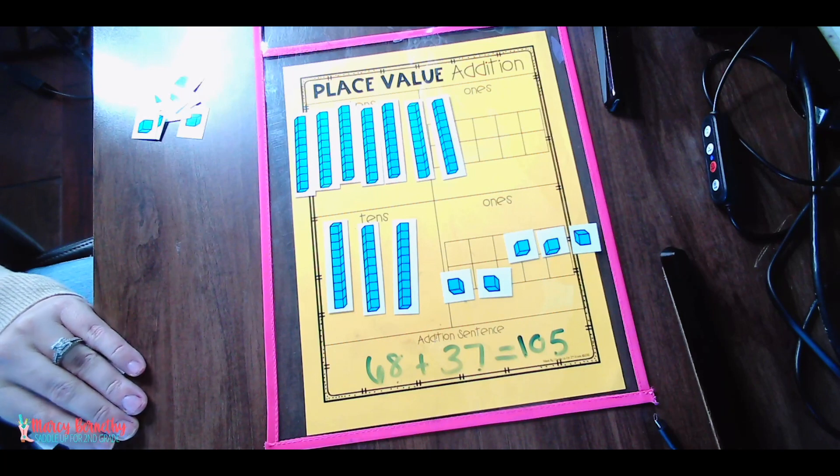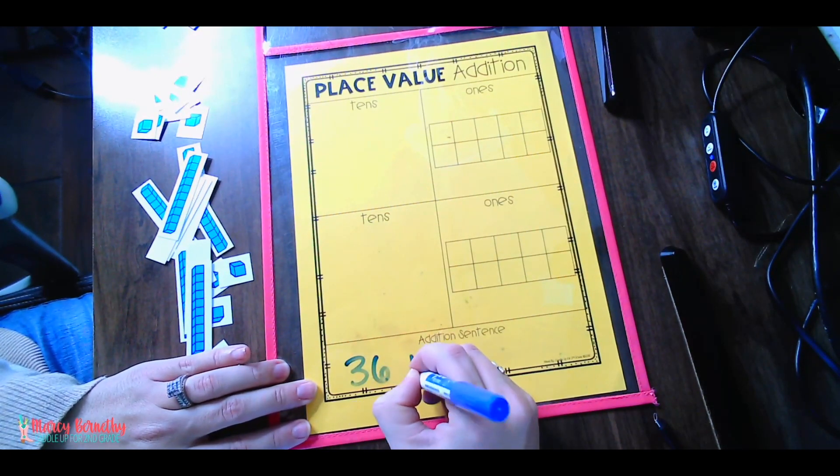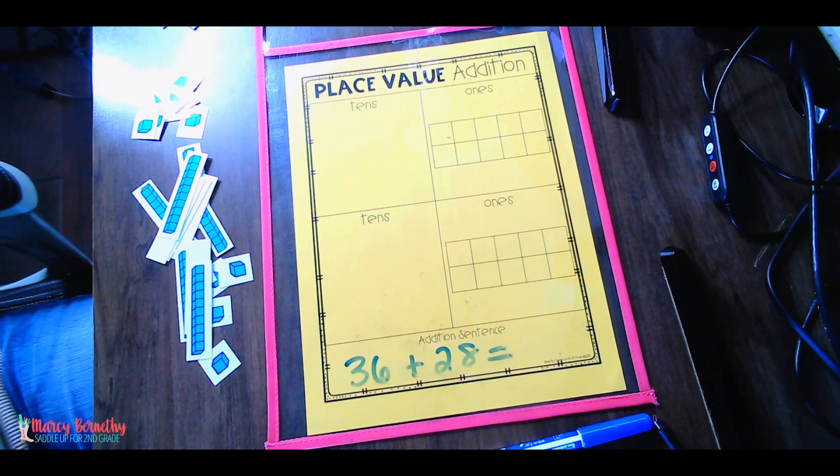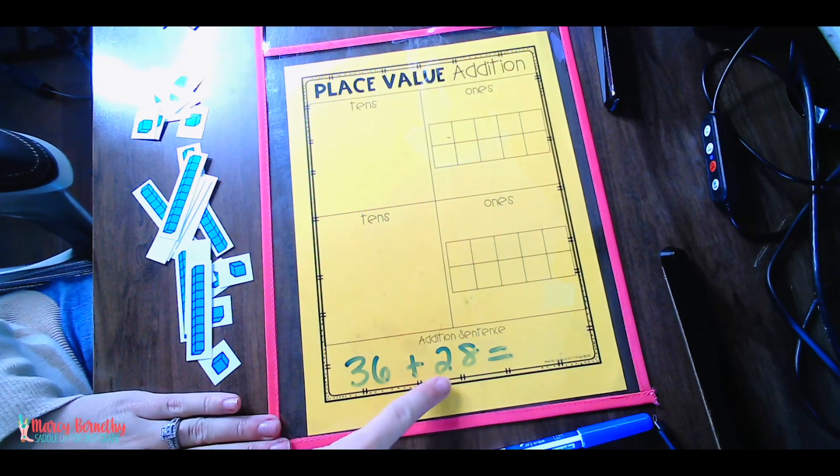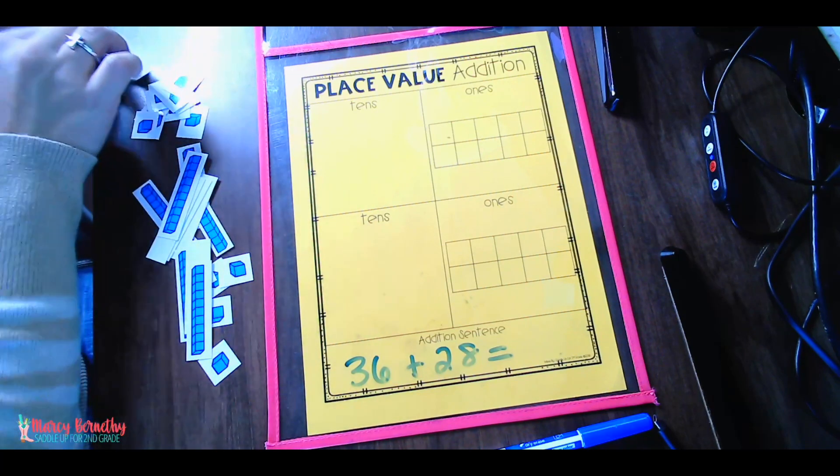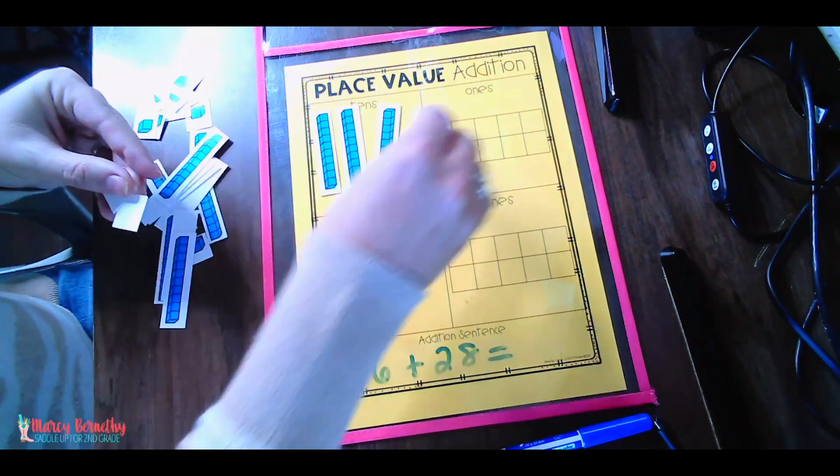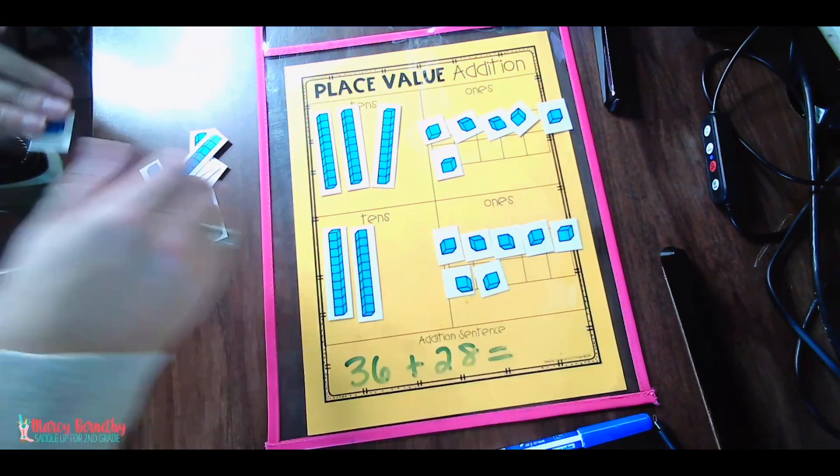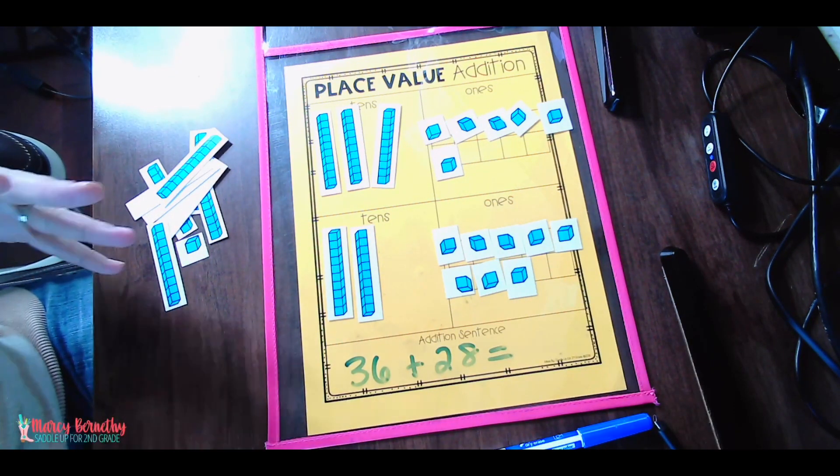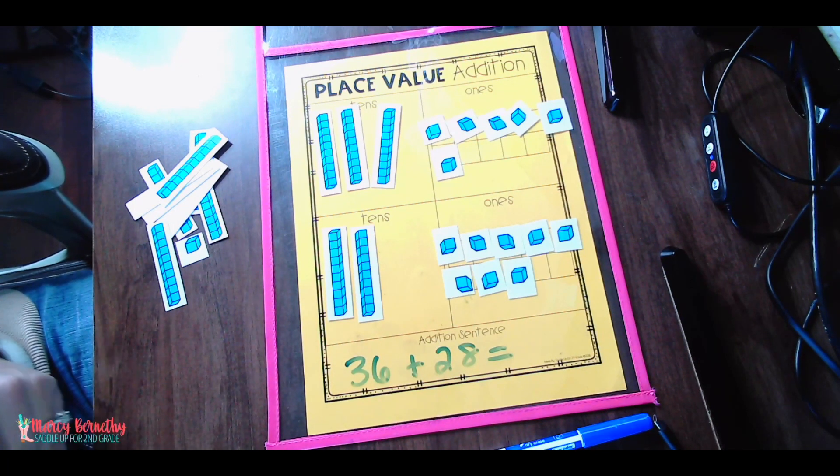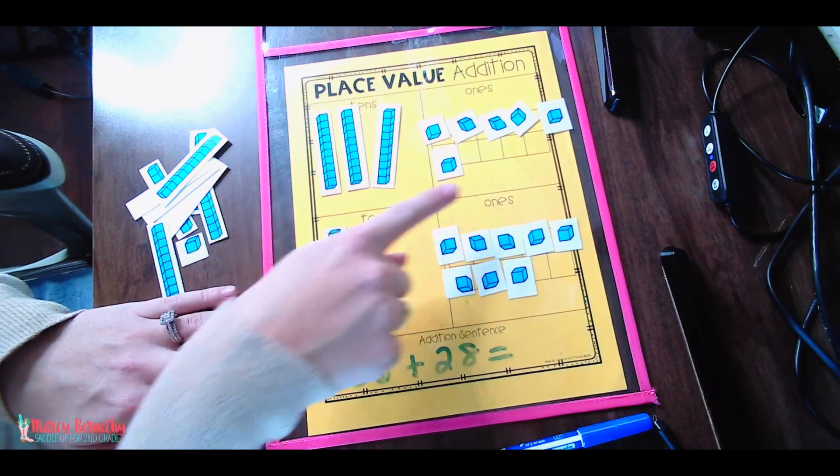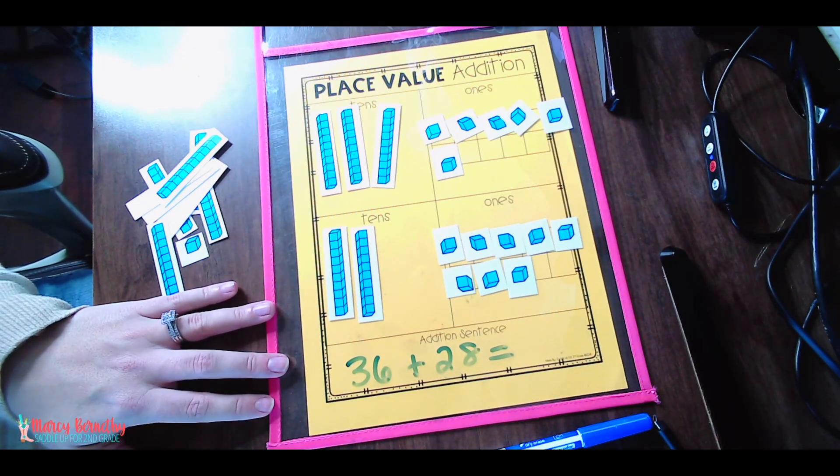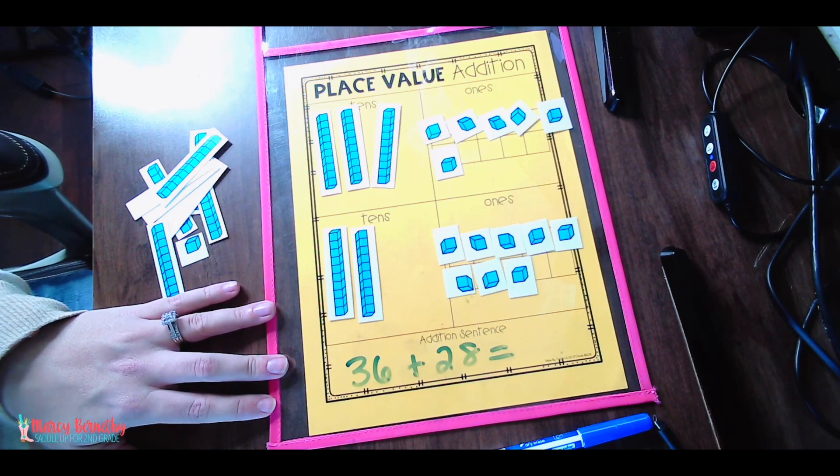Now, let me show you one more example using 36 plus 28. So remember, the first thing we're going to do is have our students build out the two addends using base 10 blocks. So first, they're going to build out the number 36. And then they're going to build the number 28. Now we'll say, Okay, what do we do first? First, we are going to add the ones place. So they are going to count and add their ones. Six plus eight equals 14. 14 is 10 or more. So what do we need to do? We need to regroup.